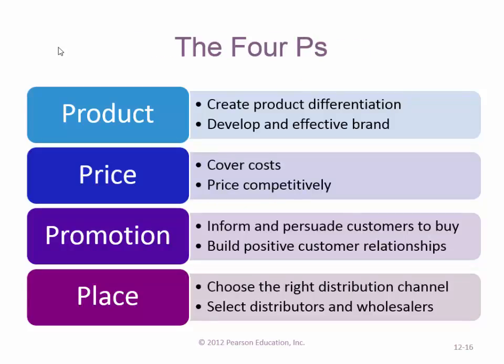We talk about product differentiation, price, promotion, and place. How we promote depends on the target: for college-educated individuals, more Facebook and online computer-type marketing. If you're trying to sell to someone in their 60s, it's going to be more television advertising and print advertising. I notice this myself — the TV shows I like now have commercials about Medicare and knee pain. And we need to think about place utility — where are we going to distribute that?